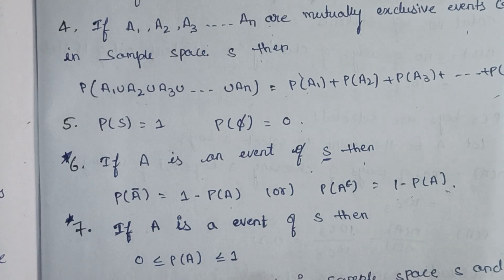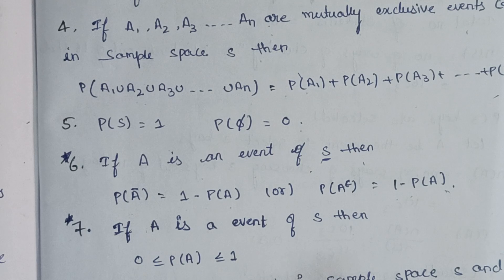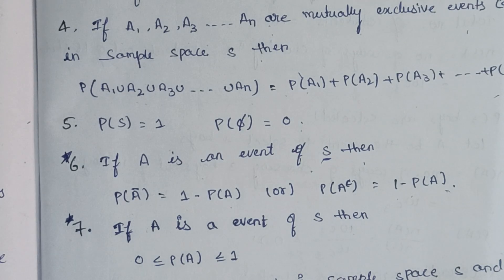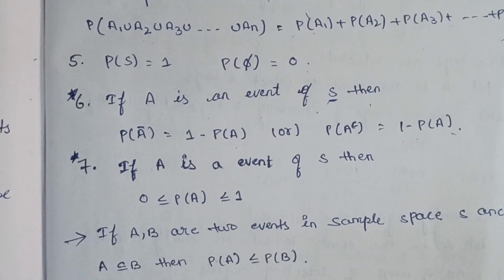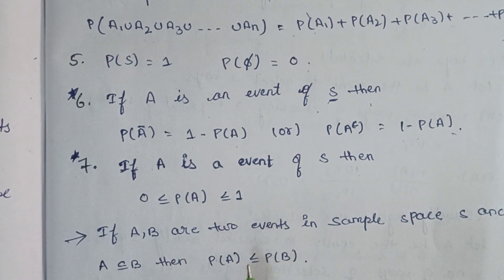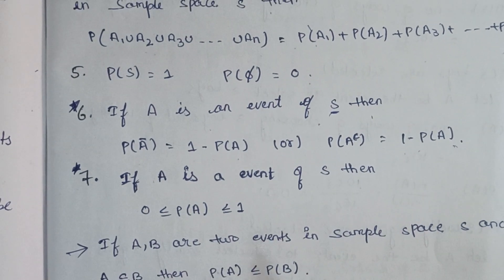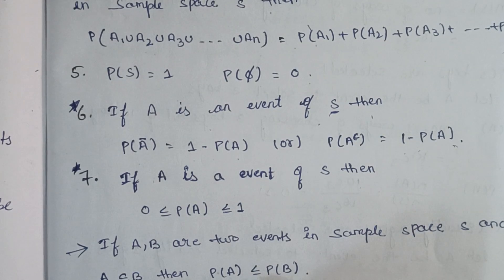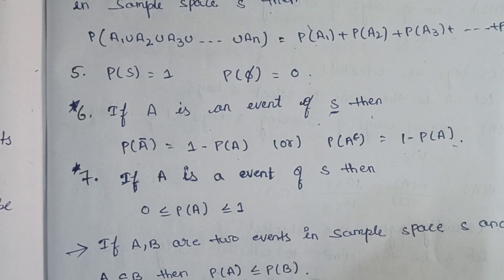If A and B are two events in a sample space S, and if A is a subset of B, then P(A) is less than or equal to P(B).